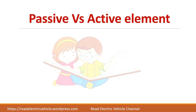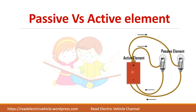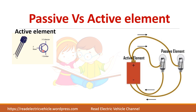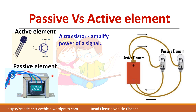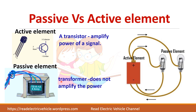A battery is an active element which supplies energy, while a passive element receives energy. A transistor can amplify the power of a signal, so it is called an active element. A transformer, on the other hand, cannot change the power — the input and output power remain the same; it can only step up the voltage or current. Therefore a transformer is a passive element.